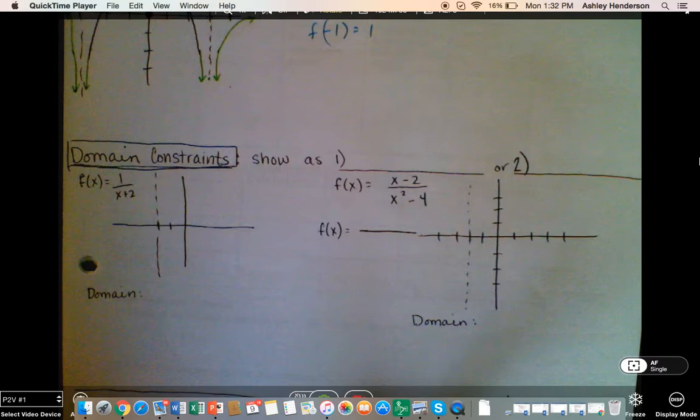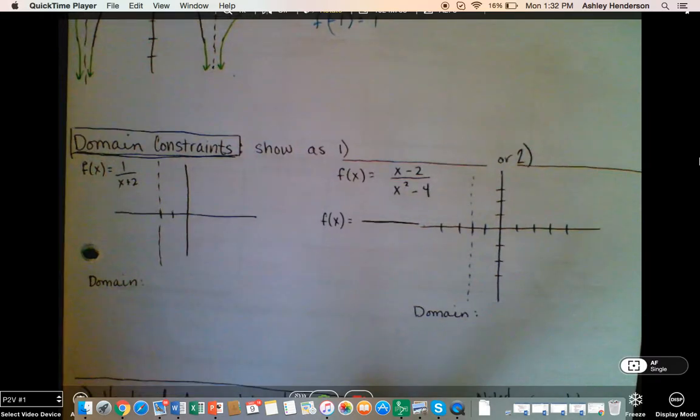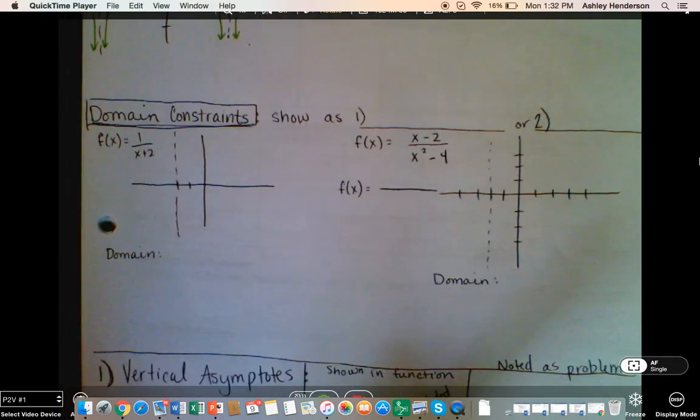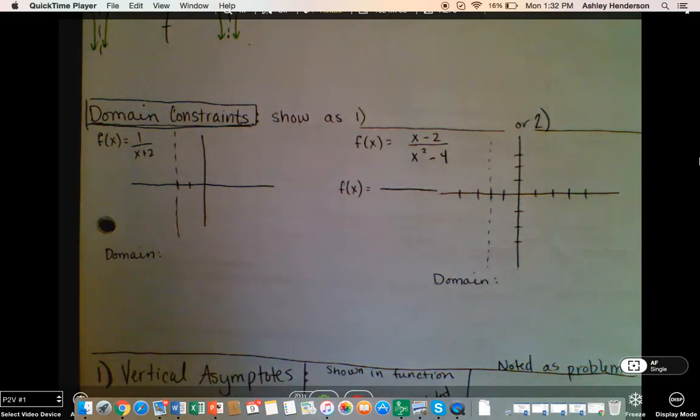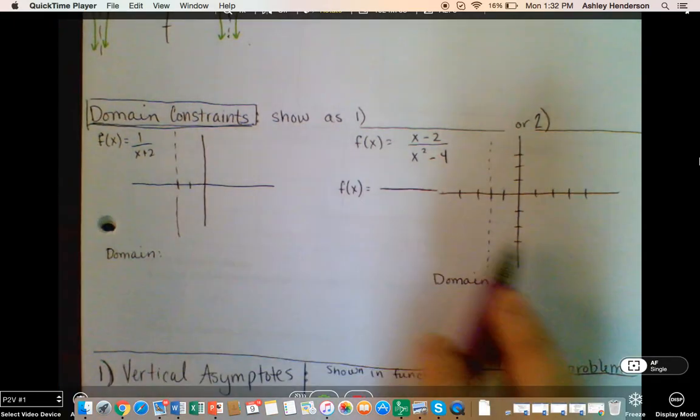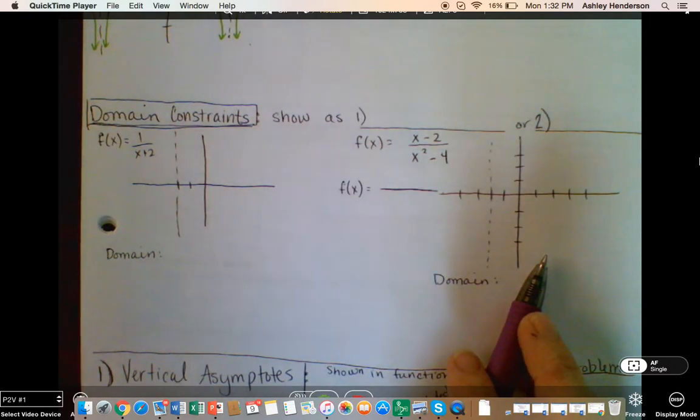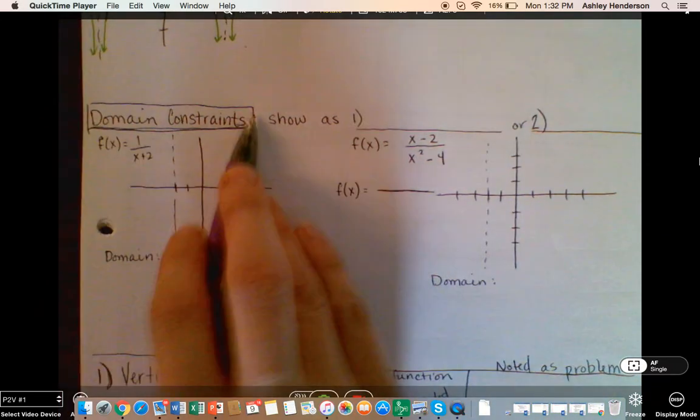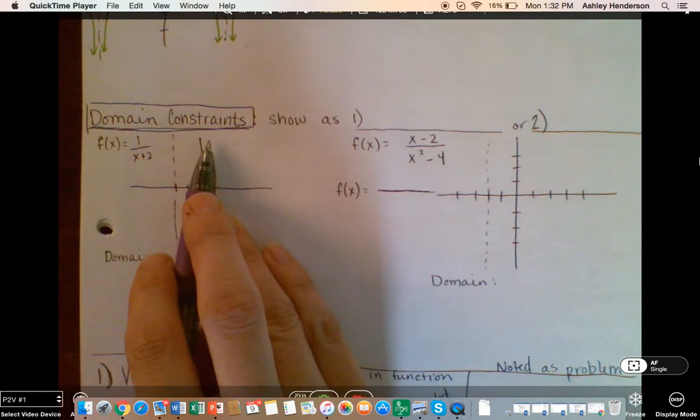So what are some different domain constraints? One of the things we were talking about at the very beginning of this session was that the domain issues are what create the weird functions or weird components of the functions. So we're going to look at this guy on the left and see how it's different than this one on the right. So there's two ways that domain issues can happen. There's two things.